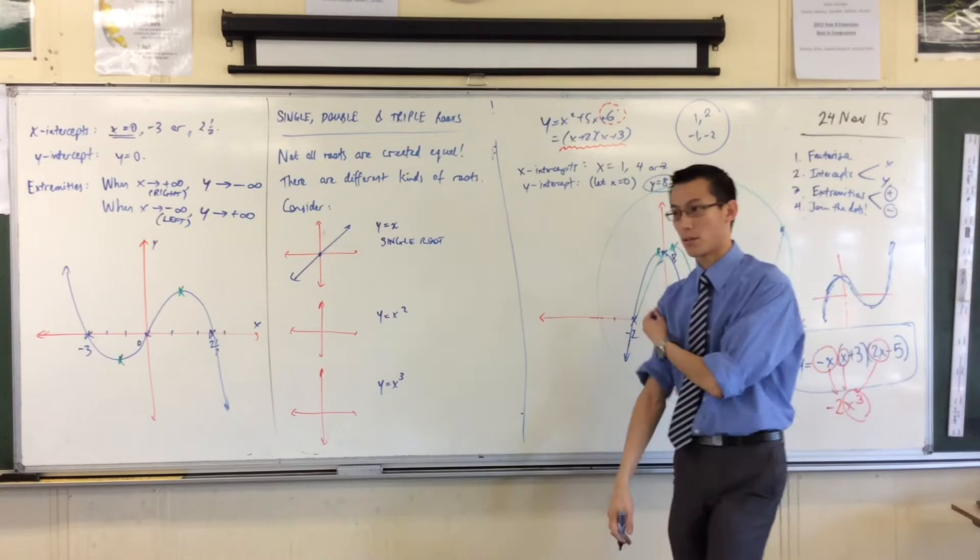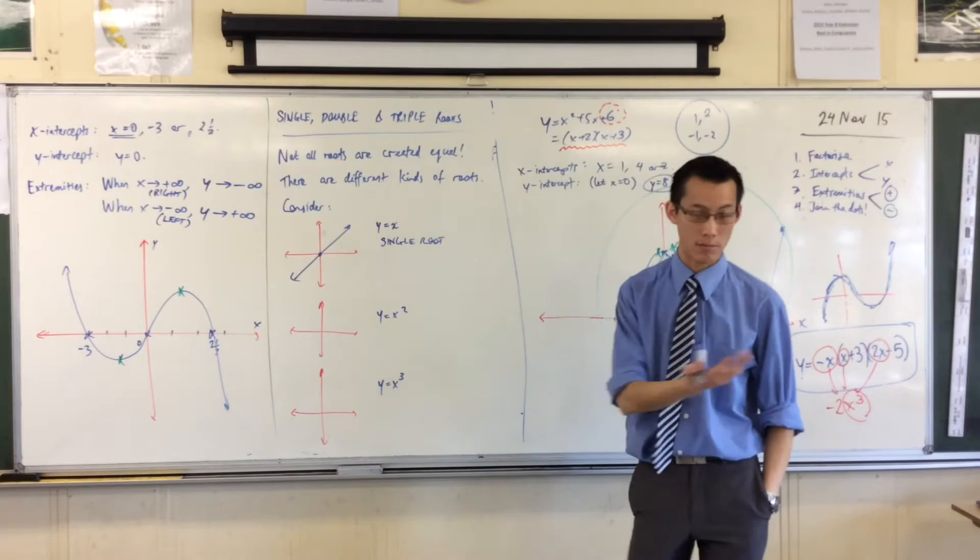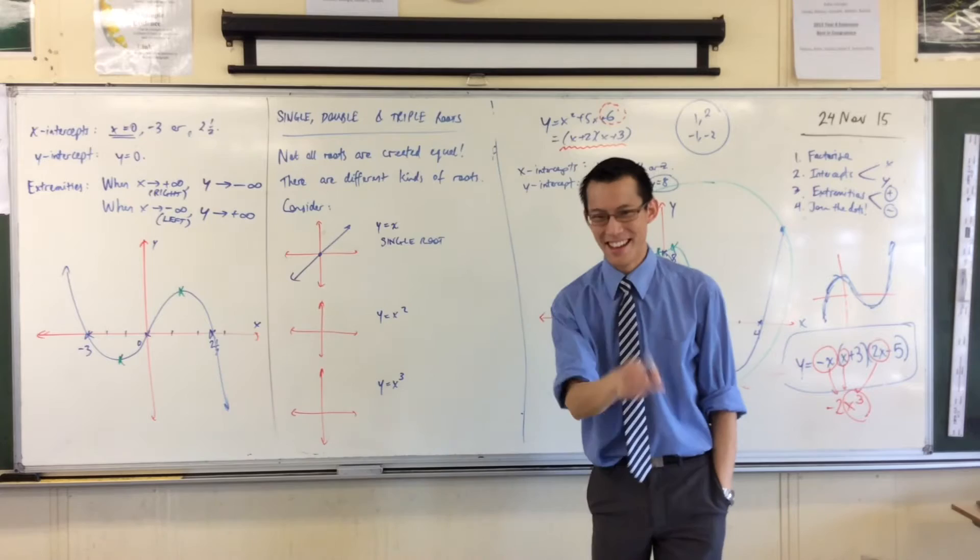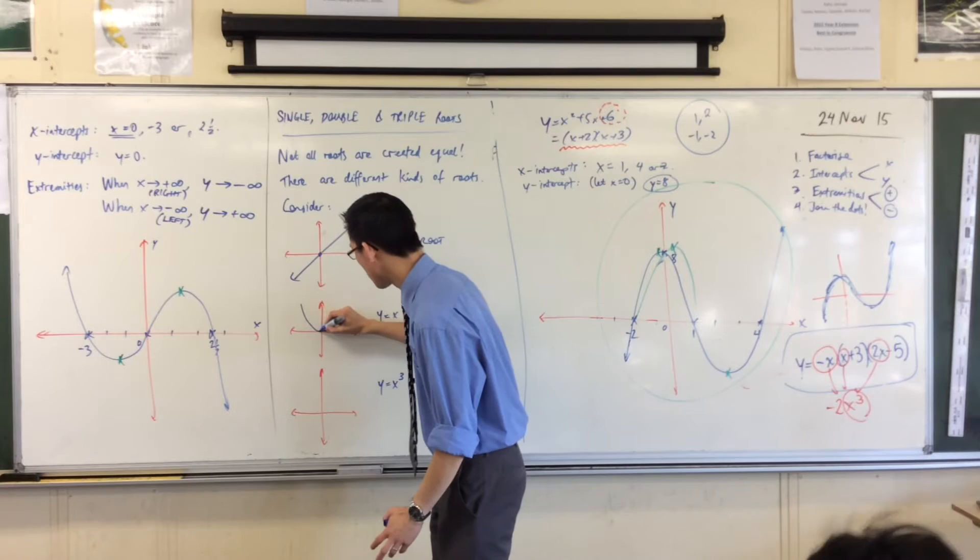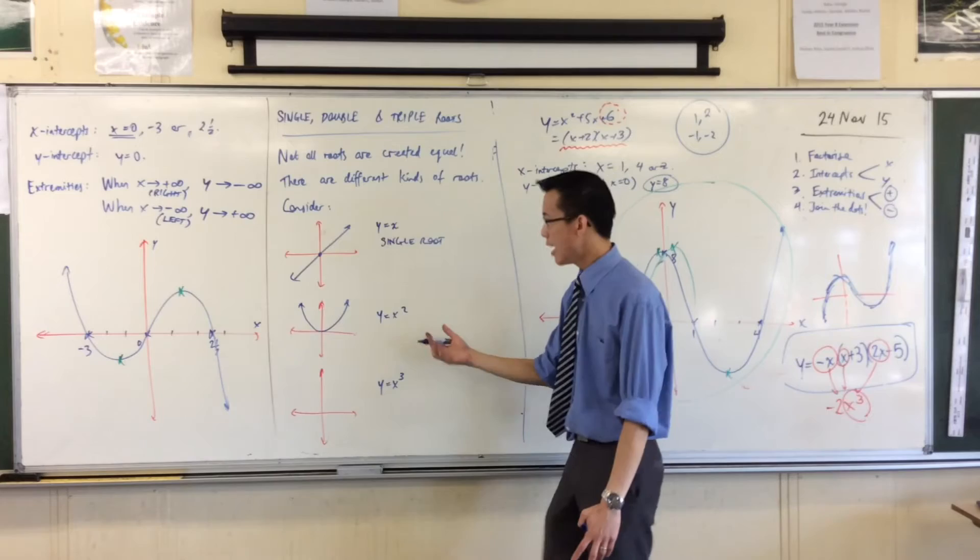So I'm going to draw that, and you can draw one as well. It doesn't have to be beautiful. But you can see there's a root at the origin, right? No big deal. We call this a single root. We're going to label all of these. And then I'm going to add some more language to describe what's going on.